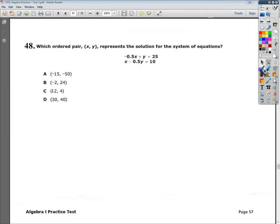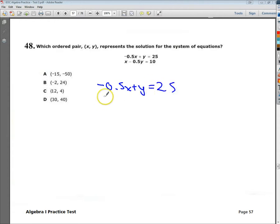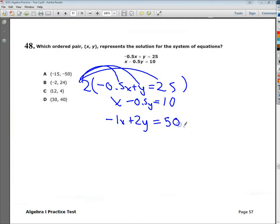From here, I can look at elimination. Now, elimination, I want to get rid of either my x term or my y term and then work from there. I know that this is 1 half, so I'm actually going to get rid of that 1 half by multiplying by 2. I have to multiply everything by 2. So 2 times negative 0.5 is negative 1, 2 times y is 2y, and 2 times 25 is 50. Now I have plus 1 up here and minus 1 down here, so those end up canceling out. Then I do 2 minus 0.5, so 1.5. And then 50 plus 10 gives me 60.